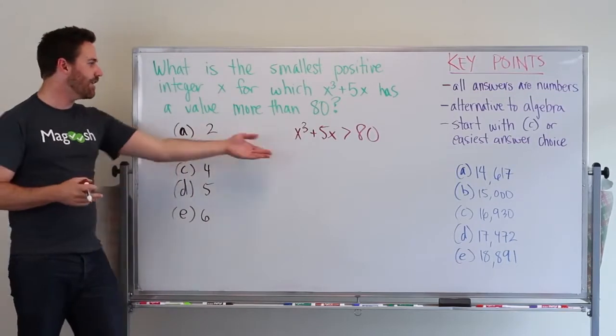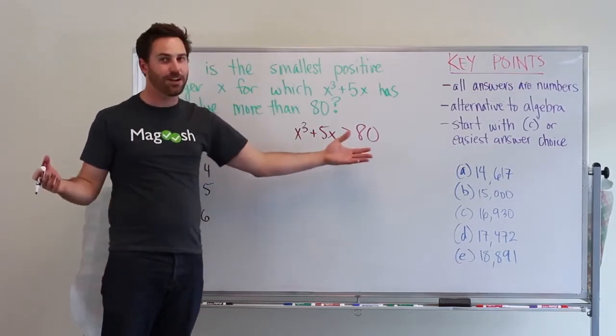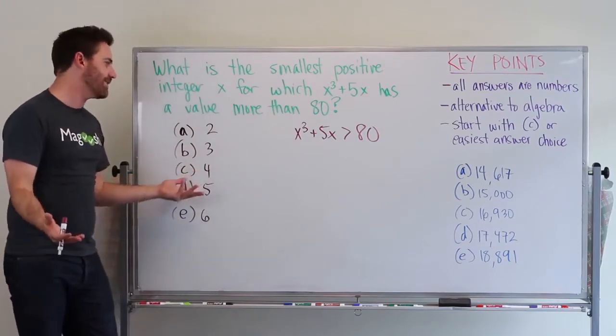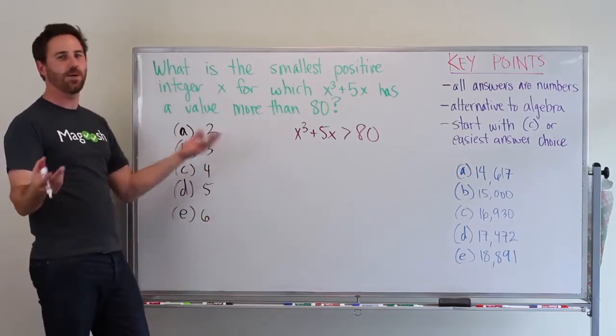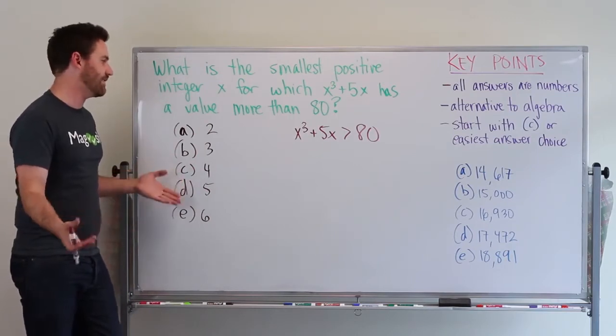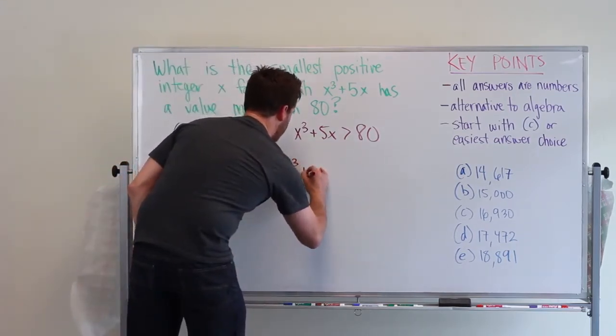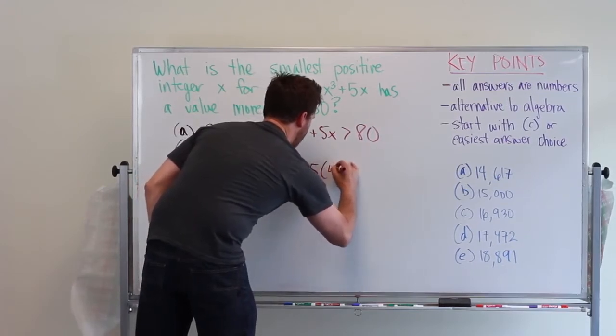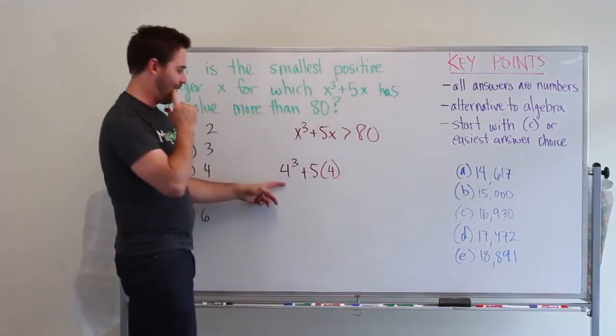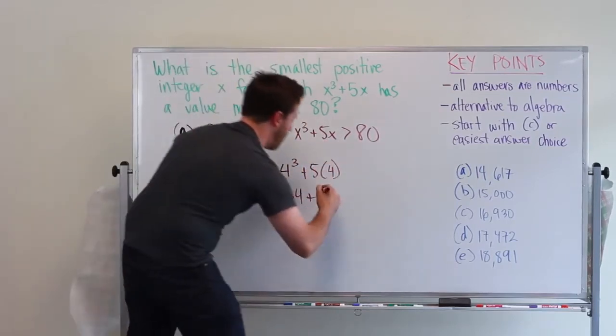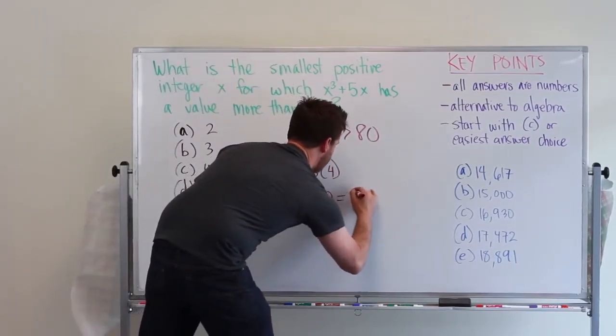Instead of trying to solve this algebraic equation, why not just use some of these numbers and plug them in to see what we end up with? As I said, let's start with C. So I'll plug in 4³ + 5 × 4. So 4³ is 64, and 5 × 4 is 20. That gives me 84.